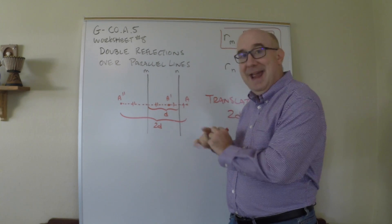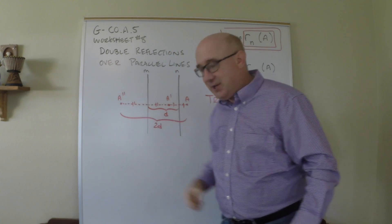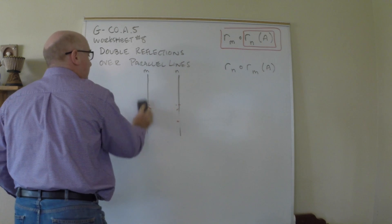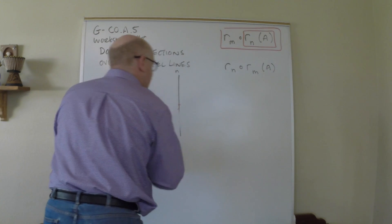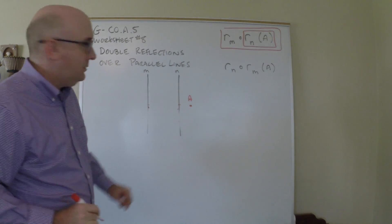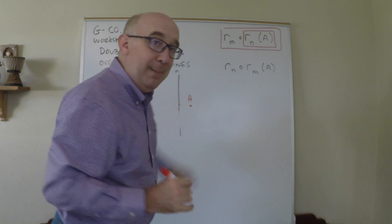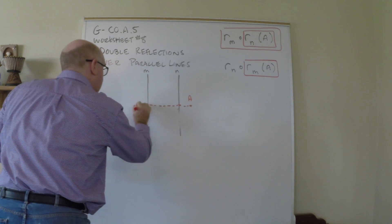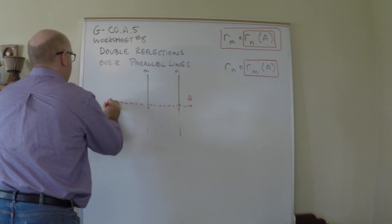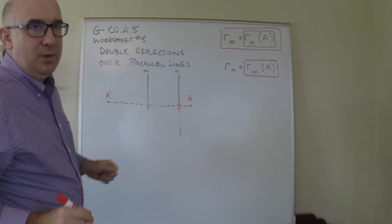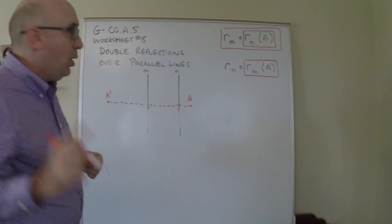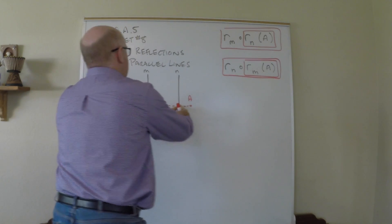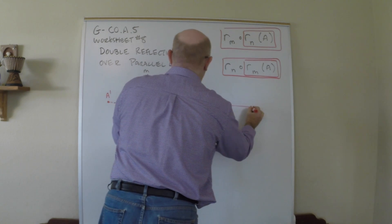Now let's talk direction. We reflected over n first and then m — that's why it went in that direction. Let's keep our point in the same spot and perform the same reflections in the opposite order. Now we reflect over m first, so it reflects to somewhere about here. This is kind of surprising — we're way over here.